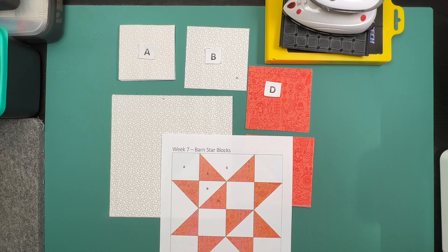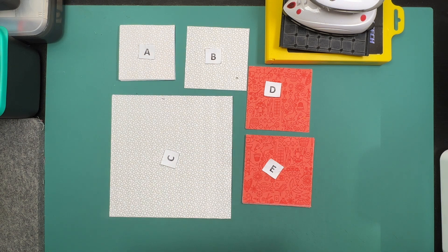Because we need four or eight flying geese in this instance, because we are making two of these blocks, so two lots of four, we will be making those flying geese units four at a time.